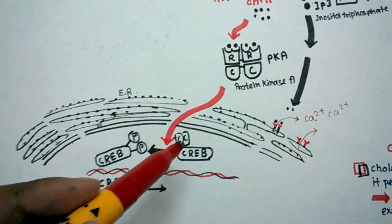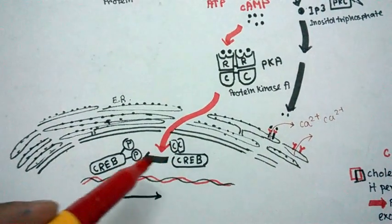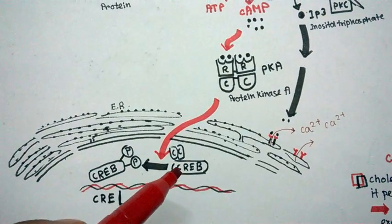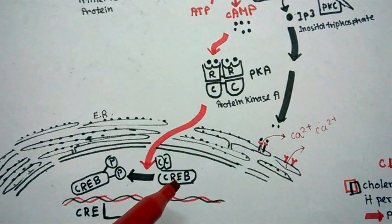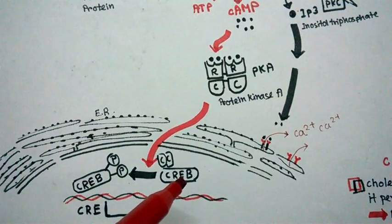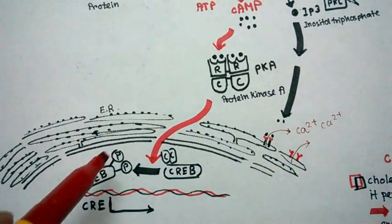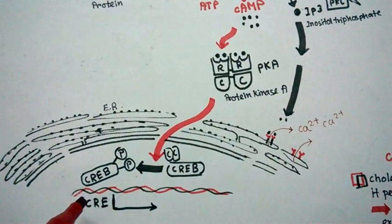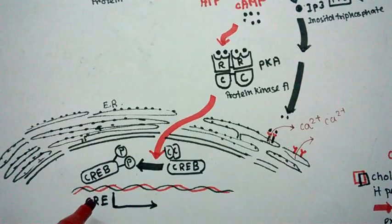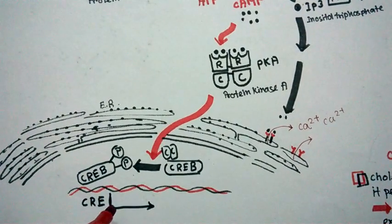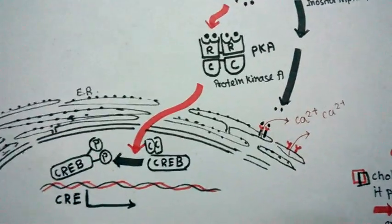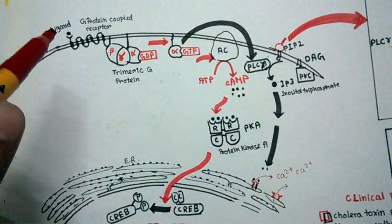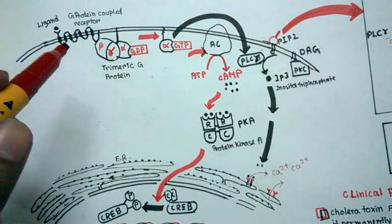The catalytic domain phosphorylates the CREB protein. CREB is cyclic AMP response element binding protein. Once CREB gets phosphorylated, it will bind to the cyclic AMP response element and help to transcribe many important genes.